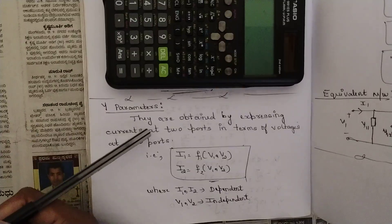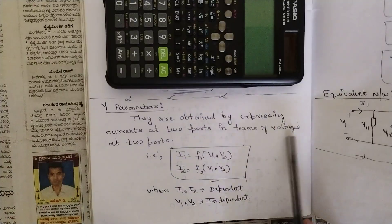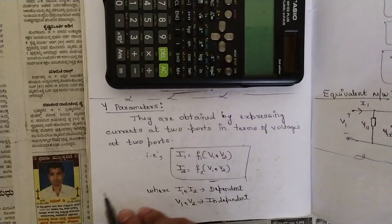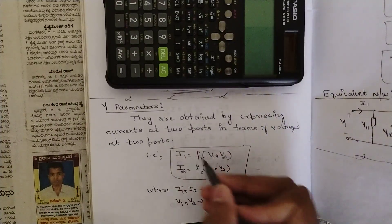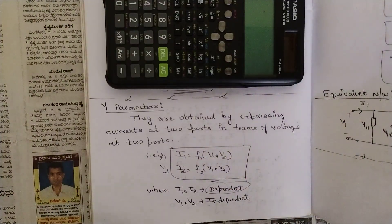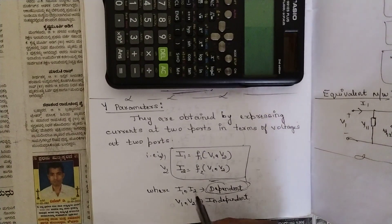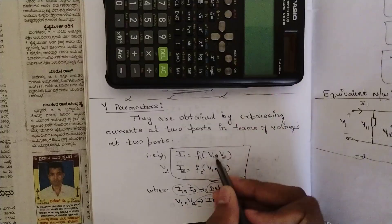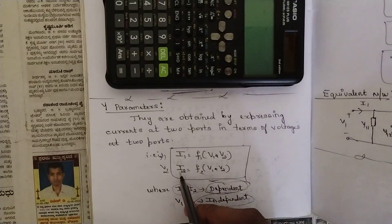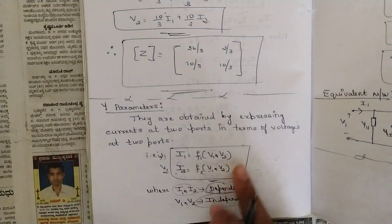Y parameters are obtained by expressing currents at two ports in terms of voltages at two ports. This is just the reciprocal of Z parameters. In Z parameters the dependent variables were V1 and V2; now in Y parameters, instead of voltage we take current and instead of current we take voltage — so dependent variables are now currents I1 and I2, and independent variables are V1 and V2.